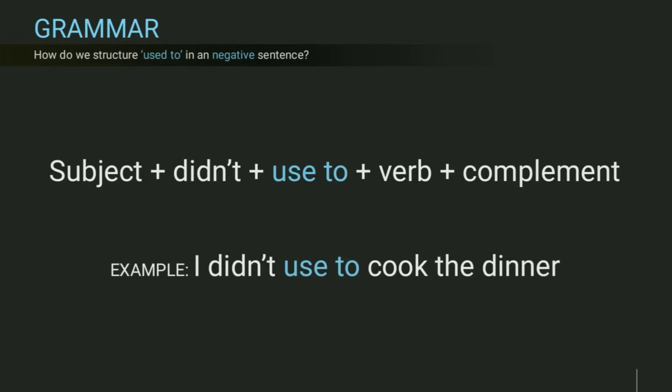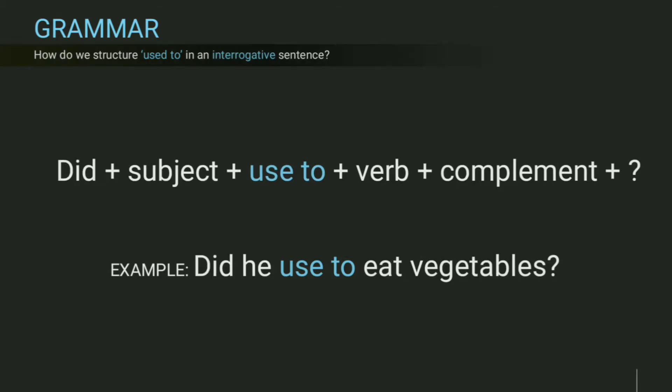How do we structure used to in an interrogative sentence? Put did plus subject plus used to plus verb plus complement plus question mark. Like a negative sentence, used is in present. For example, did he used to eat vegetables?